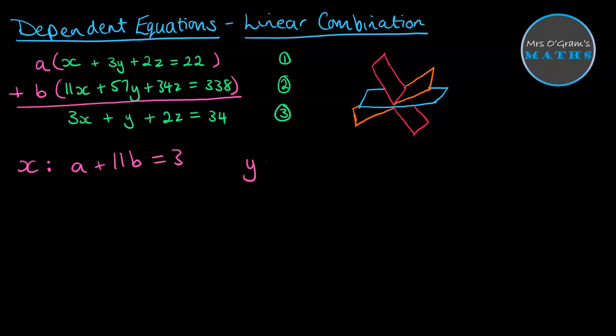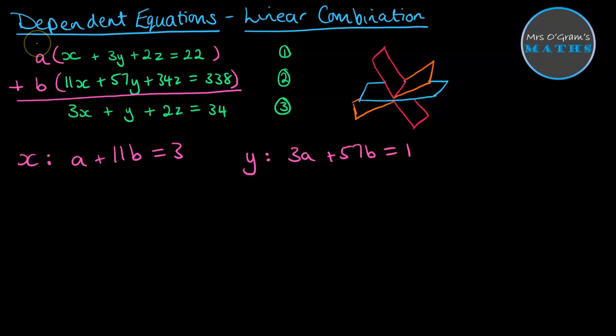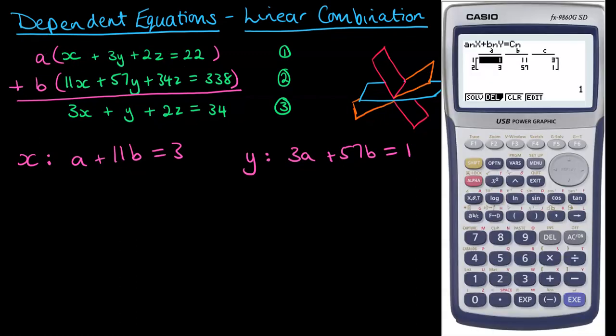On the y's, we get 3a plus 57b is equal to 1. So we've got two simultaneous equations, and we can solve them using equation solver on the graphics calculator.